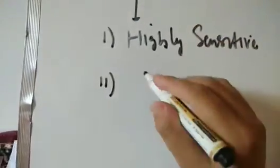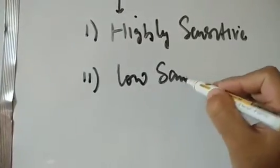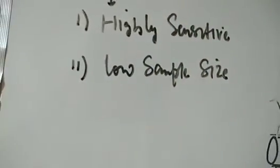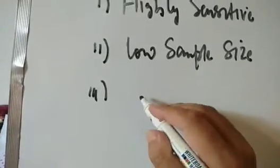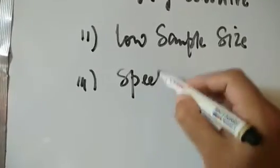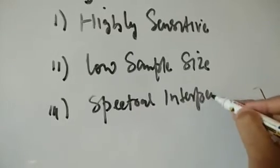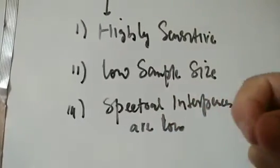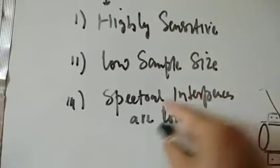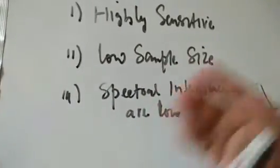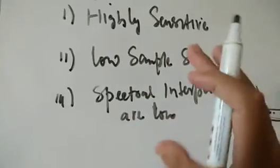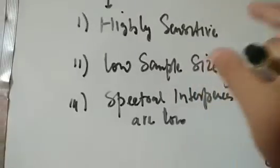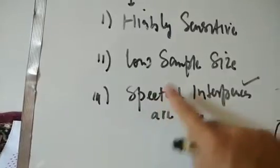Advantage number two: it requires a very low sample size — only a small amount of sample is needed for analysis. Another important advantage is that spectral interferences are very low. This is because all the volatile impurities are removed initially in the earlier stages, so the final result is more accurate. It gives better possible detection without any interferences. So in summary: highly sensitive, low sample requirement, and very low spectral interferences.